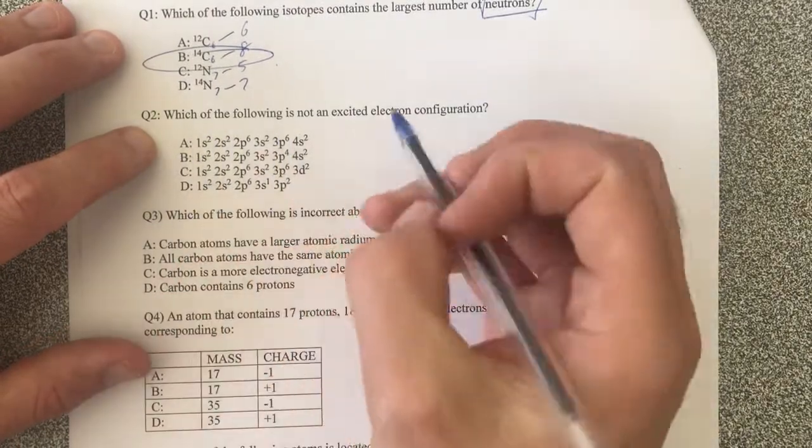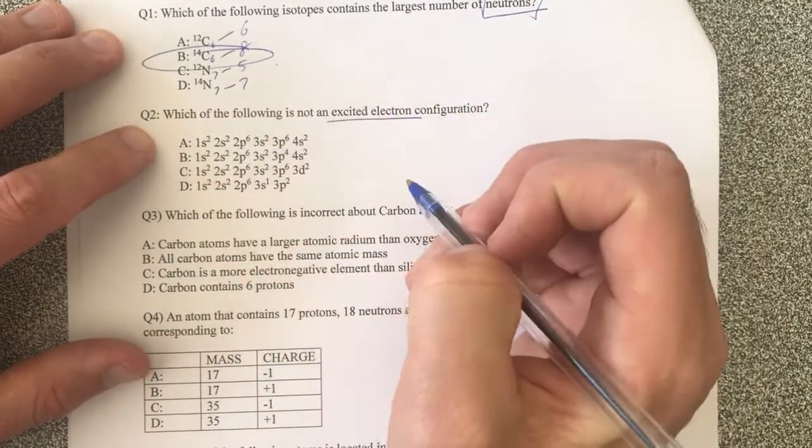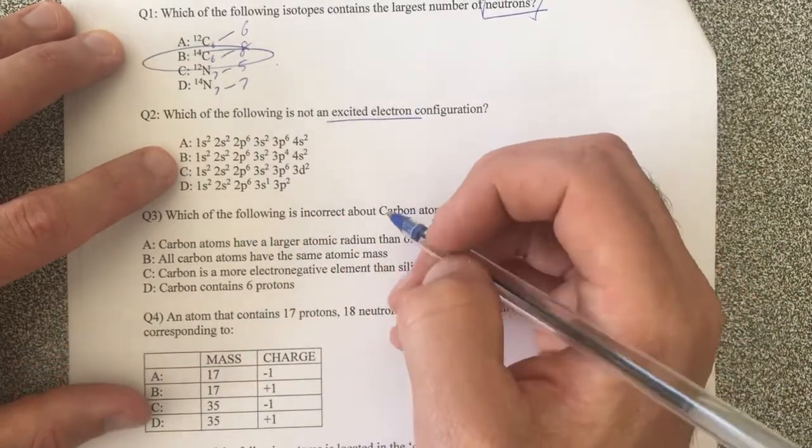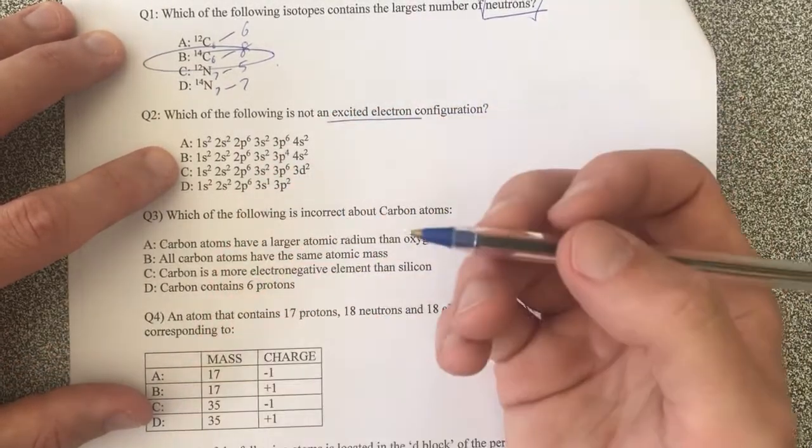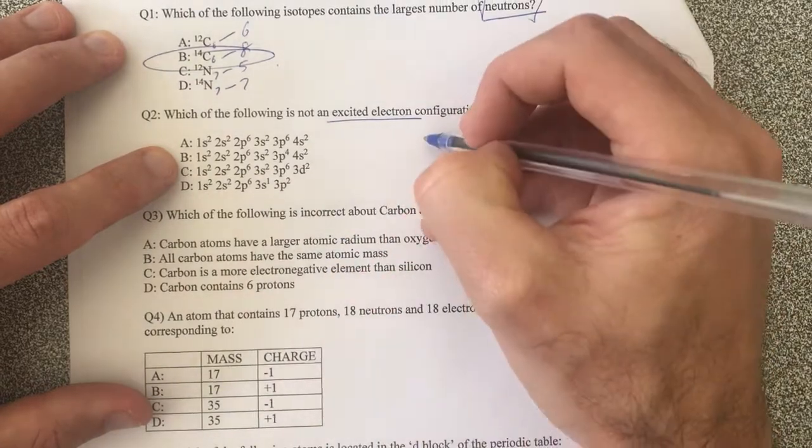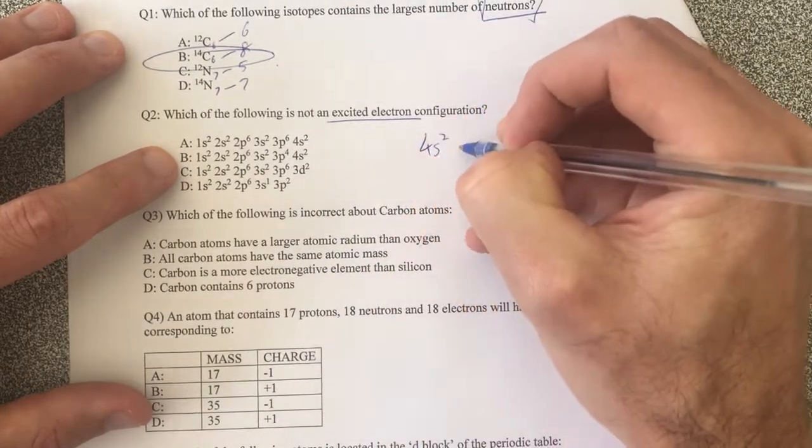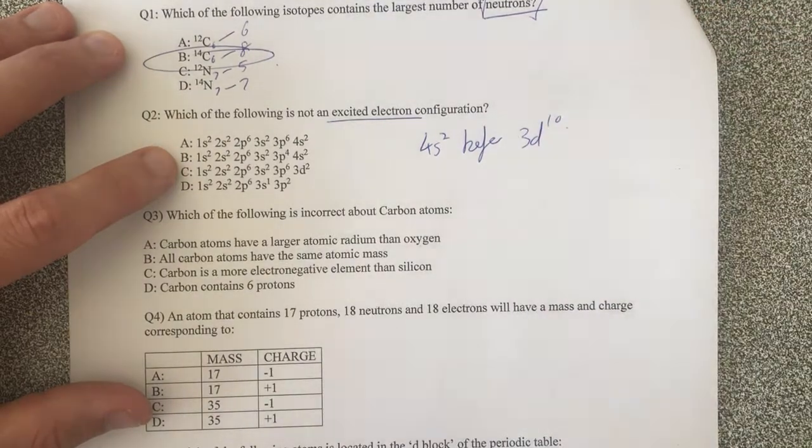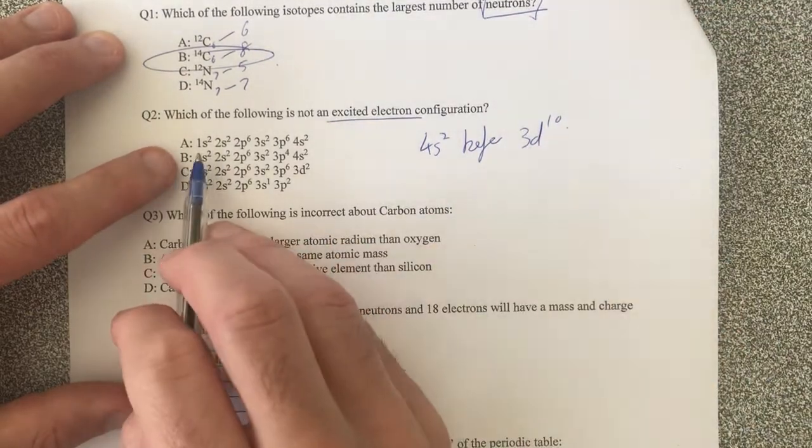Which of the following is not an excited electron configuration? So that means which one follows the right pattern of electron configuration filling. The most important thing to know, remember here, is that 4s2 is before 3d10 because otherwise it's pretty straightforward.